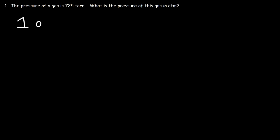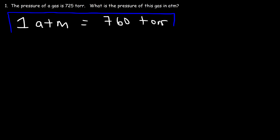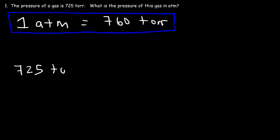The pressure of a gas is 725 torr. What is the pressure of this gas in ATM? The first thing you want to do is identify the conversion factor. We know that one ATM is equal to 760 units of torr — so this is the conversion factor. Now start with what you're given: in this case, we're given 725 units of torr, and our goal is to convert it to ATM.